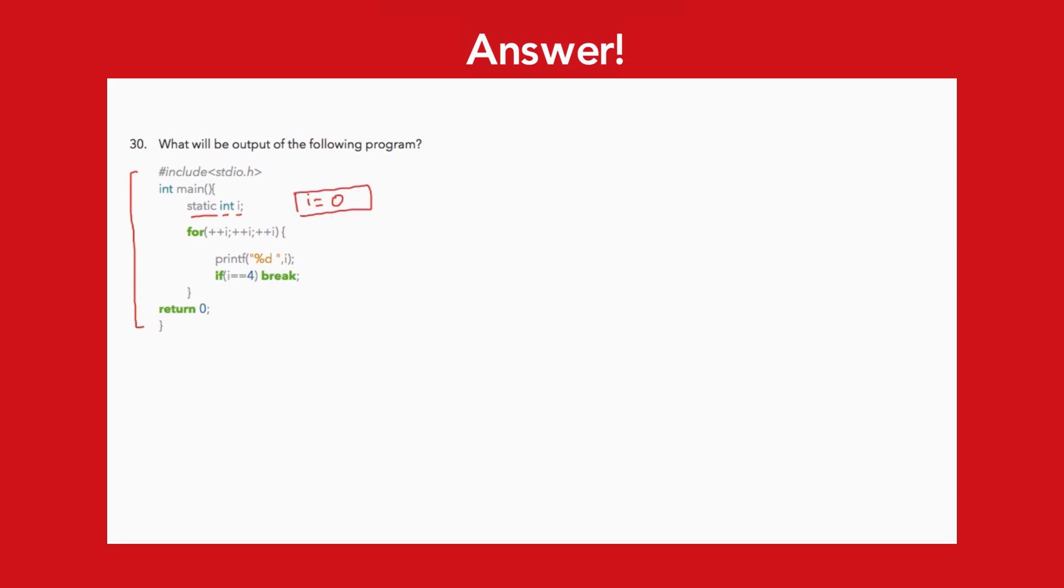Then we have a for loop where I am writing for statement as plus plus i. So i will be incremented to 1. Then we have another condition plus plus i. So i will become 2 over here.